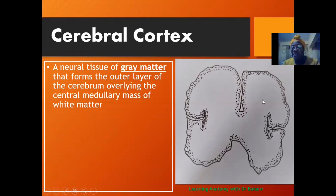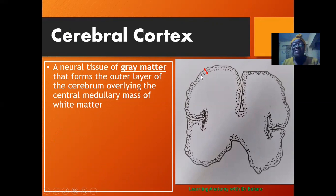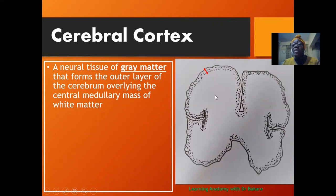This is the cerebral hemisphere and the outer gray layer is termed the cerebral cortex. This is the outer layer, and deep to the cerebral cortex we have the cerebral medulla. The medulla is whitish in color while the cerebral cortex is grayish in color. The outer region is termed the cerebral cortex and that is what our lecture will be focusing on. The inner deeper layer, termed the cerebral medulla, will be looked at in our subsequent lecture.